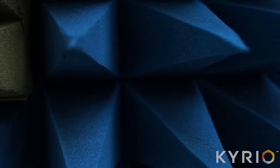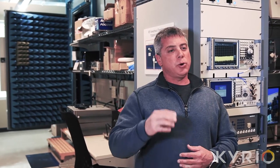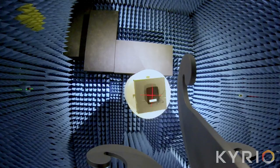The anechoic chamber is lined with cones that absorb any reflections so there's no outside interference and there's no reflections within the chamber.